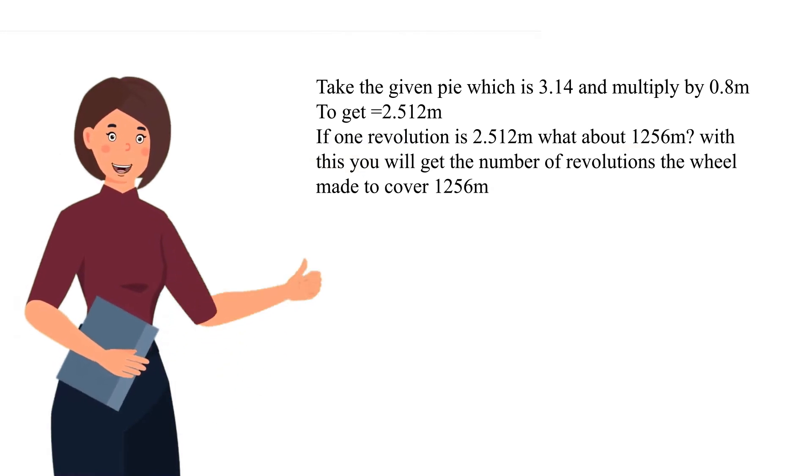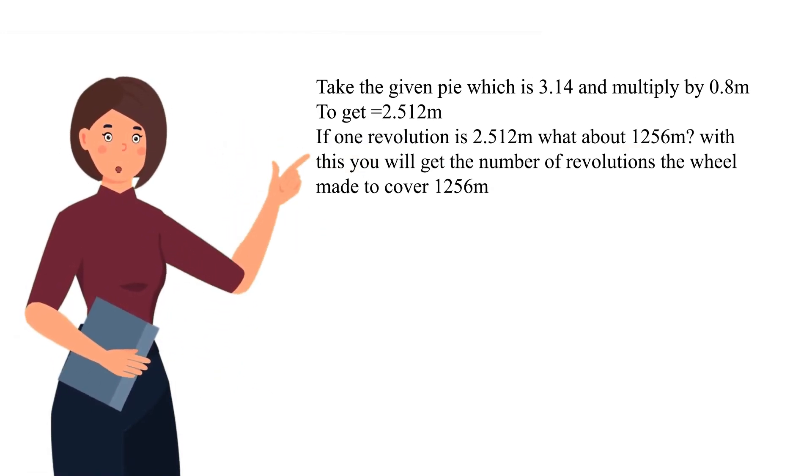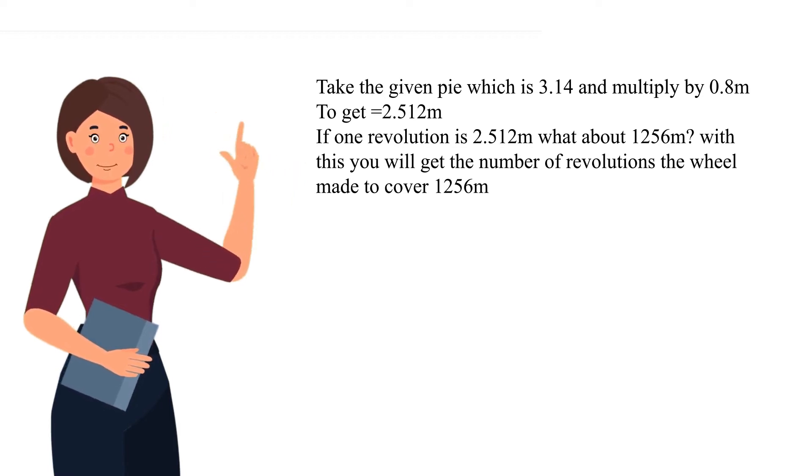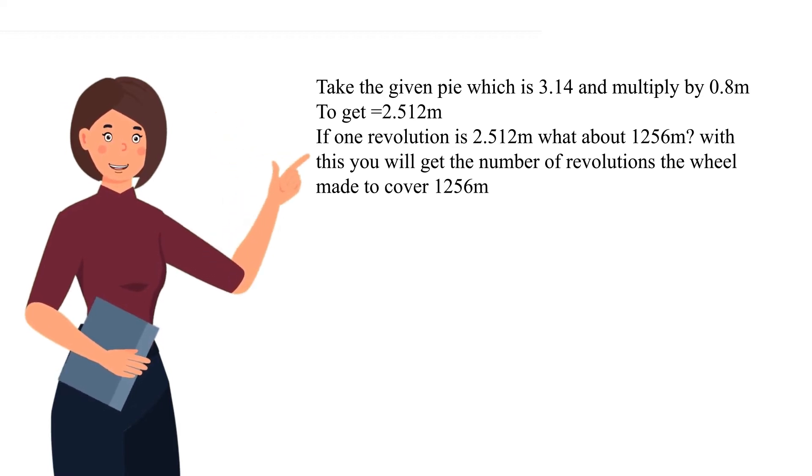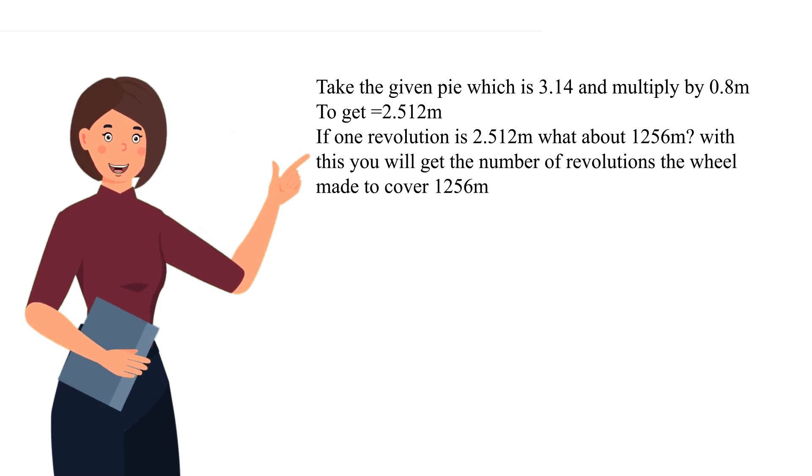Take the given pi which is 3.14 and multiply by 0.8 meters to get 2.512 meters. If one revolution is 2.512 meters, what about 1,256 meters? With this you will get the number of revolutions the wheel made to cover 1,256 meters.